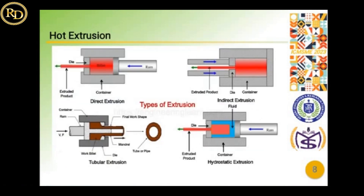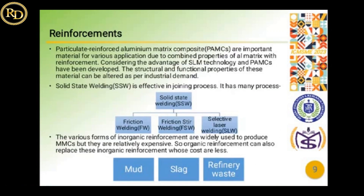Then there is the hot extrusion process. In this process, the metal is subjected to a high temperature, due to which it changes its phase, and a piston is required to push the liquid metal. Due to the pressure, they get compacted and we get a composite of the required shape.